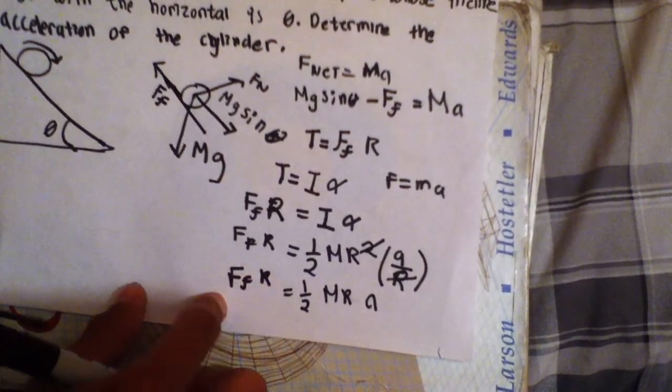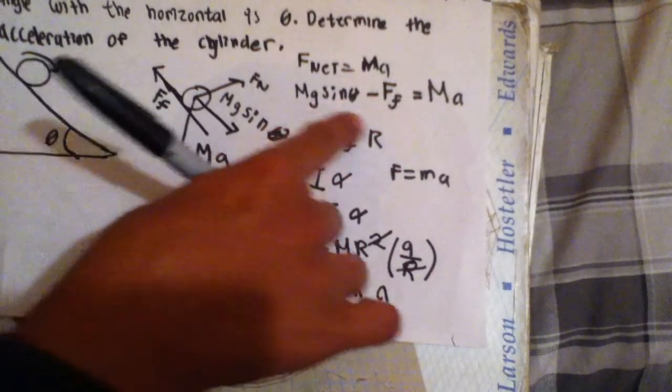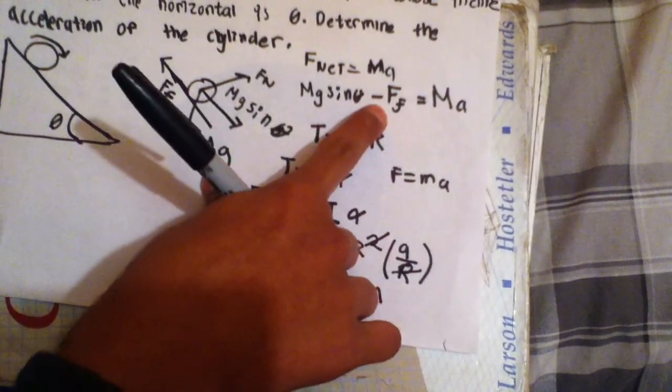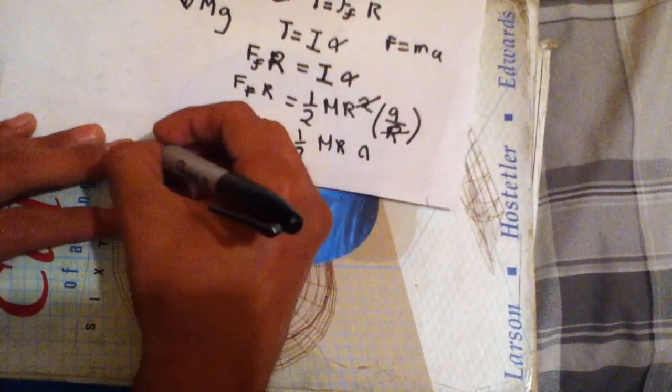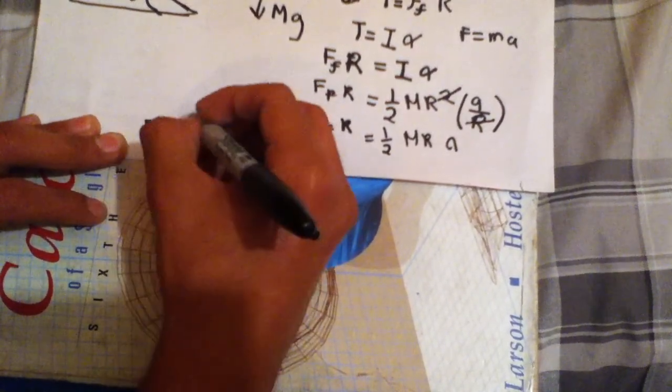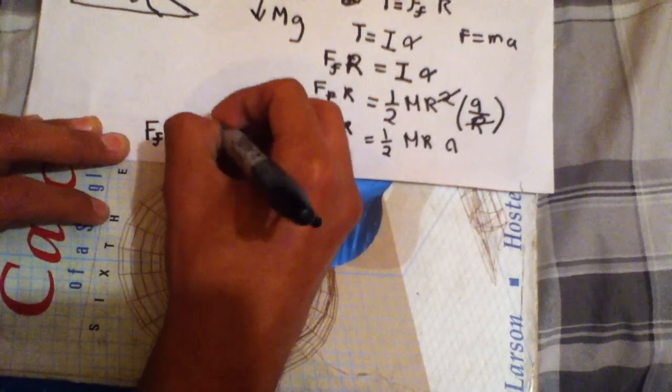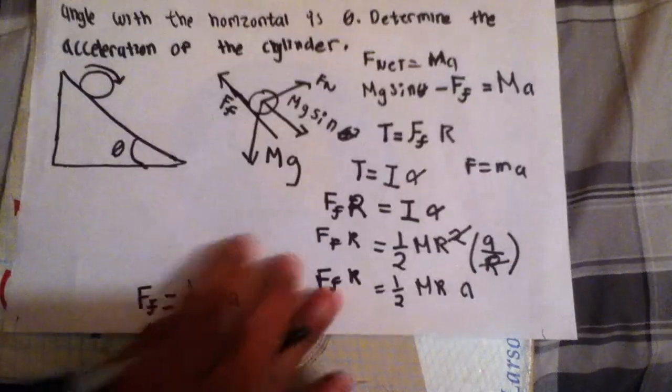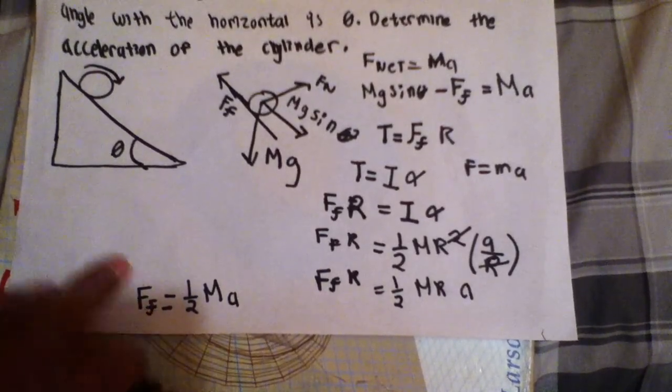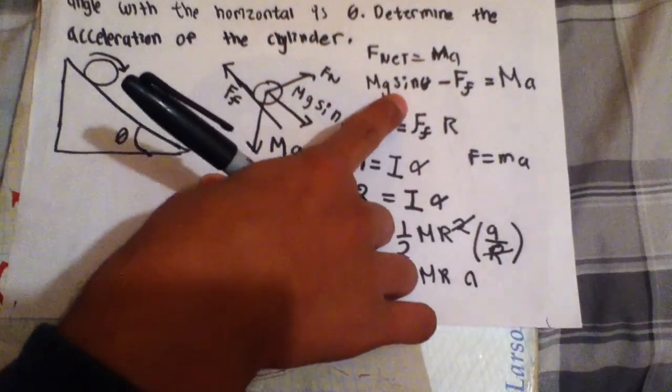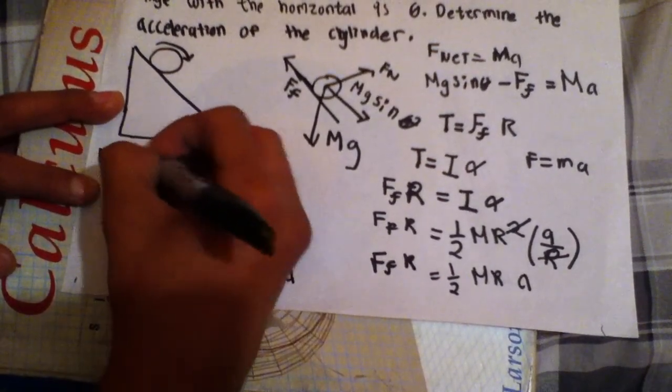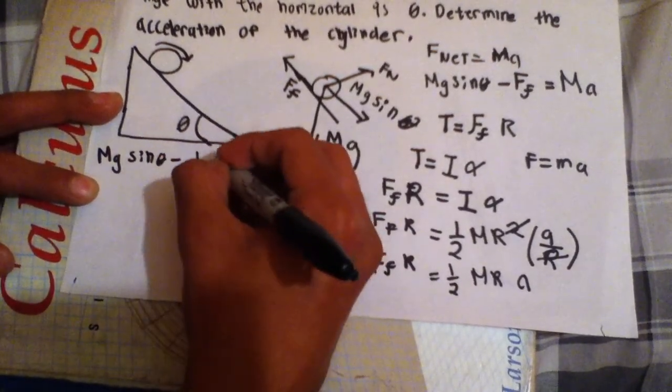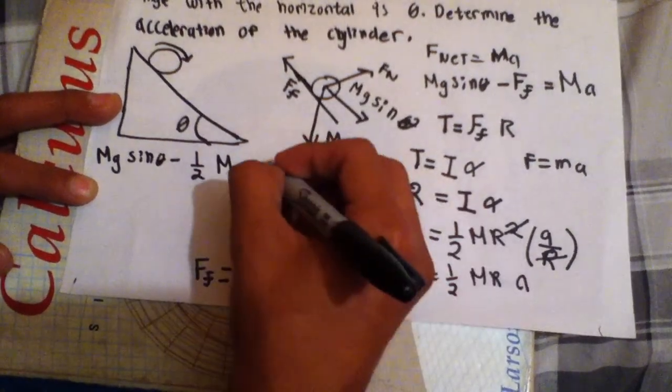You'll see in a moment that the simplifications are actually going to help us a lot for this problem. So when this R cancels with this R, we're left with just this. And remember, we want to solve for FF, force of friction, because it's going to help us solve for this A. And then you do some simple algebra. Bring the R over there, it's going to cancel. So you're going to get...